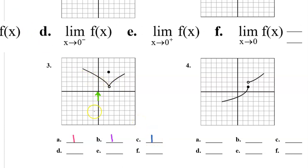Now let's talk about what happens as we approach 0. As x approaches 0 from the left we are approaching a y value of 3. As x approaches 0 from the right we are also approaching a y value of 3. Because those limits are the same, the overall limit as x approaches 0 is also 3.